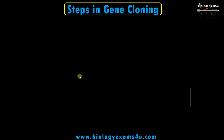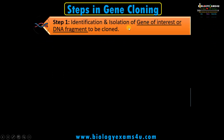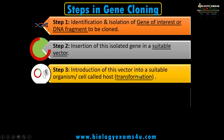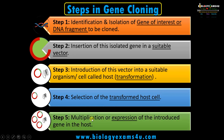Let us enlist the steps in gene cloning. Step one: identification and isolation of the gene of interest or DNA fragment to be cloned. Step two: insertion of this isolated gene in a suitable vector. Step three: introduction of this vector into a suitable host — the process is called transformation. Step four: selection of the transformed host cell. And finally, step five: multiplication or expression of the introduced gene in the host.